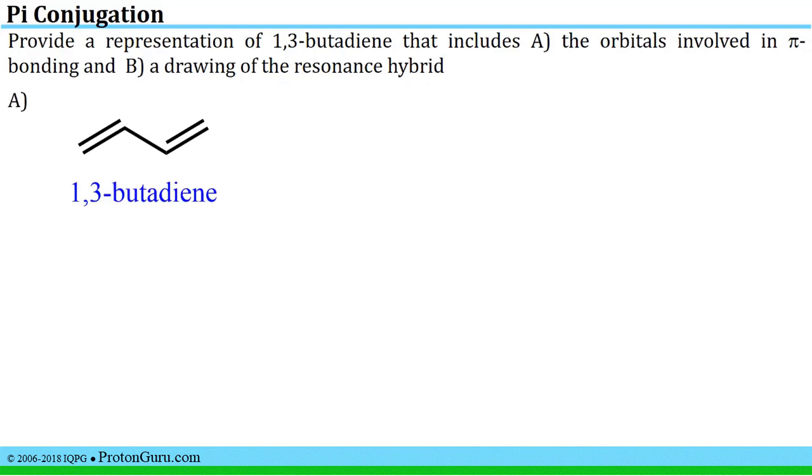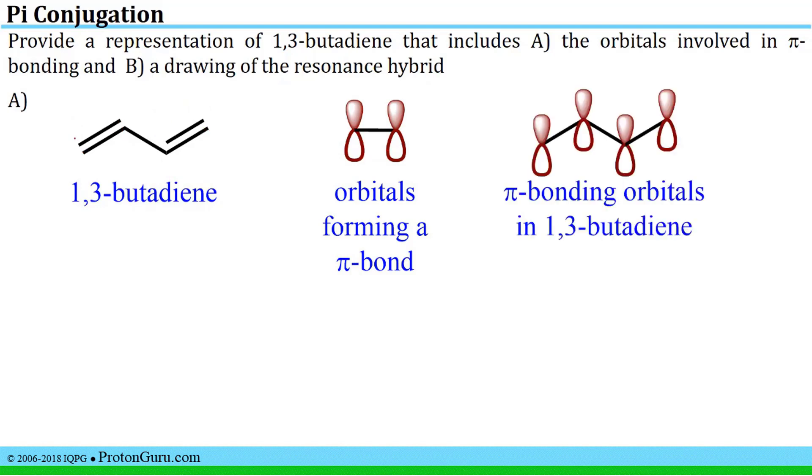In order to address this problem, we first have to draw a line bond structure of 1,3-butadiene. We next need to understand what orbitals are used to make pi bonds in general. A pi bond is formed by the overlap of two p orbitals on adjacent atoms. So two p orbitals should be present here and here in our 1,3-butadiene. So the pi bonding orbitals in 1,3-butadiene should look like this picture here.